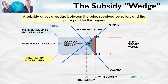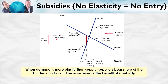Take a good look at this diagram and make sure you understand each part. Do you remember our intuition for who bears the burden of a tax? Elasticity is like escape — the more elastic the demand curve, the more demanders can escape the tax. For subsidies, a similar intuition applies: no elasticity means no entry, and when there's no entry, that's when you gain the benefits of a subsidy. When no one can come in to take the subsidy, you get the benefit.